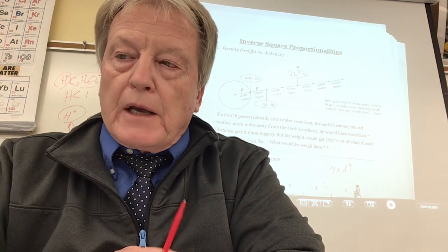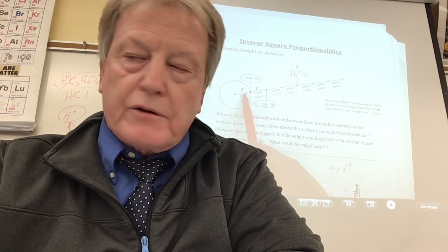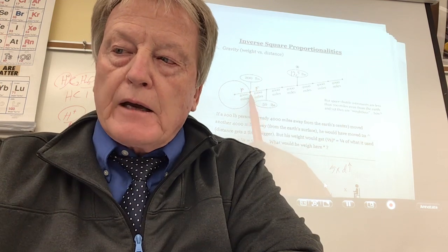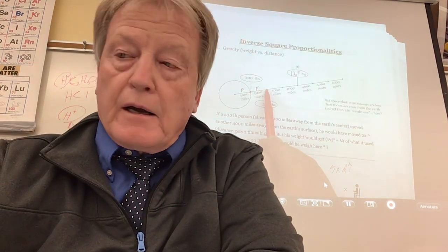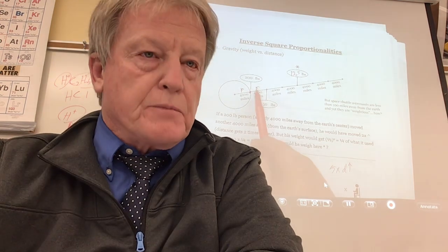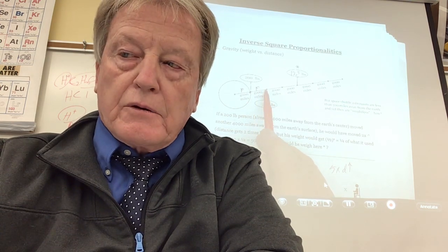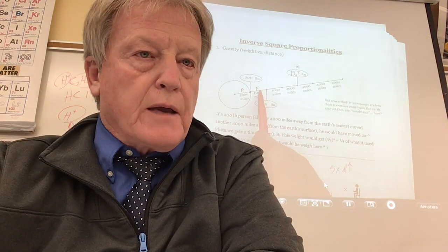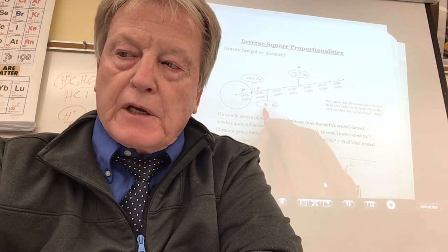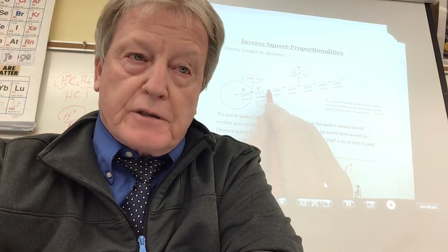If you take a look at the drawing, when somebody stands on the Earth, they are already 4,000 miles away from the center of gravity — one Earth radius away — and they might weigh, for example, 200 pounds. Now, if you were to move another 4,000 miles away from the Earth's surface, you would be two Earth radiuses away, so the distance from the center of gravity would be two times bigger. Because it's inverse square, if distance gets two times bigger, your weight will be not two but four times smaller — one-fourth of what you used to weigh. If you used to weigh 200 pounds, one-fourth of that is 50, so you'd weigh 50 pounds. And at 4,000 miles away from the Earth's surface, you're still not weightless.